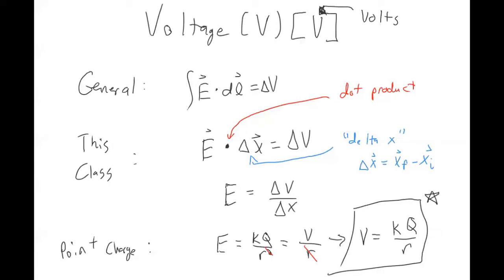Voltage is going to be very important throughout the rest of this class. Anytime we talk about circuits, we're probably going to be using voltage to describe either the battery or the alternating voltage flowing through the circuit. When you say something is a 12-volt battery, that's what they're talking about — this measurement of voltage.